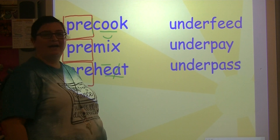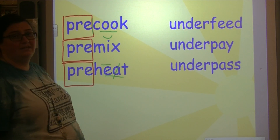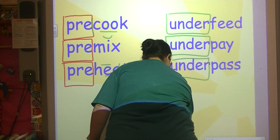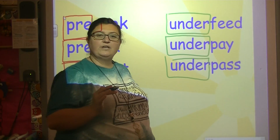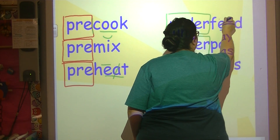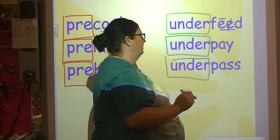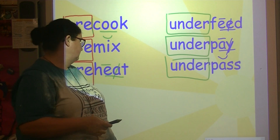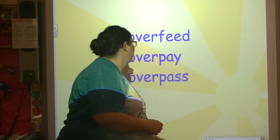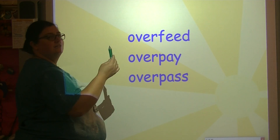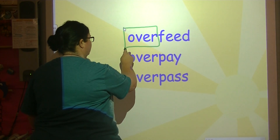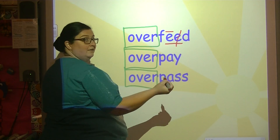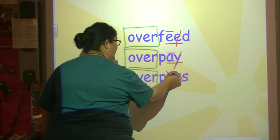Underfed, underpay, underpass — box the prefix 'under.' Feed has digraph E-E, pay has digraph A-Y, and pass has a short vowel. Overfeed, overpay, overpass — same thing. Box 'over' because it is our prefix. Then code the rest: feed has digraph E-E, pay has digraph A-Y, and pass has a short vowel.